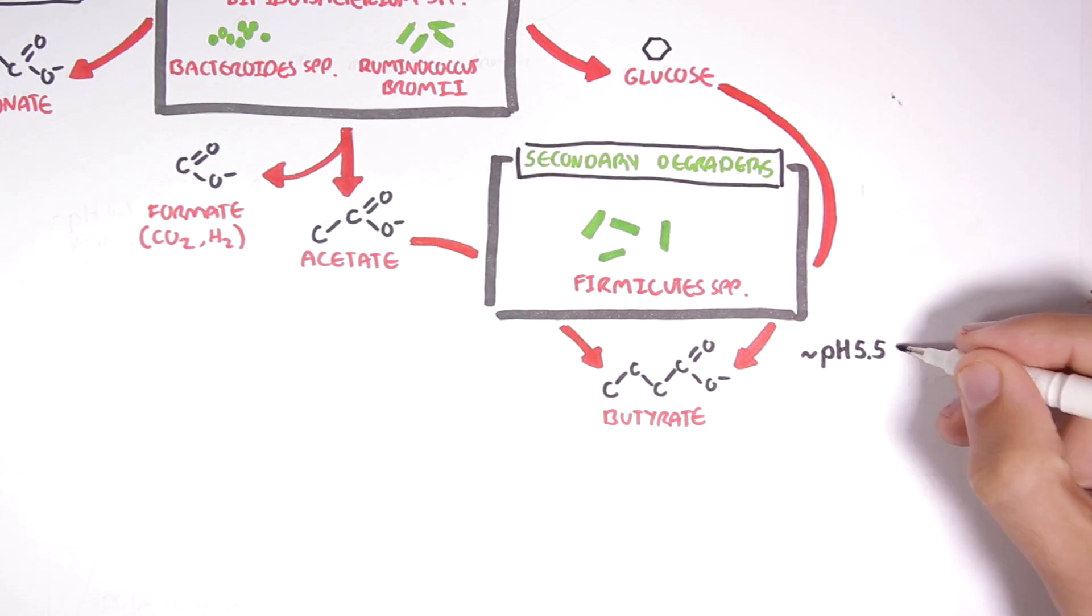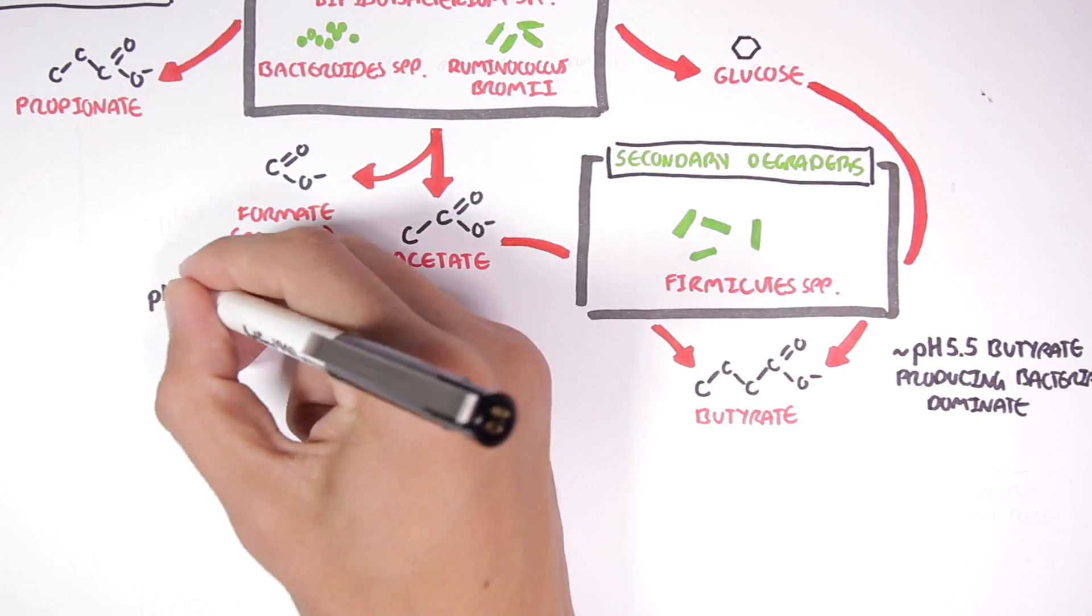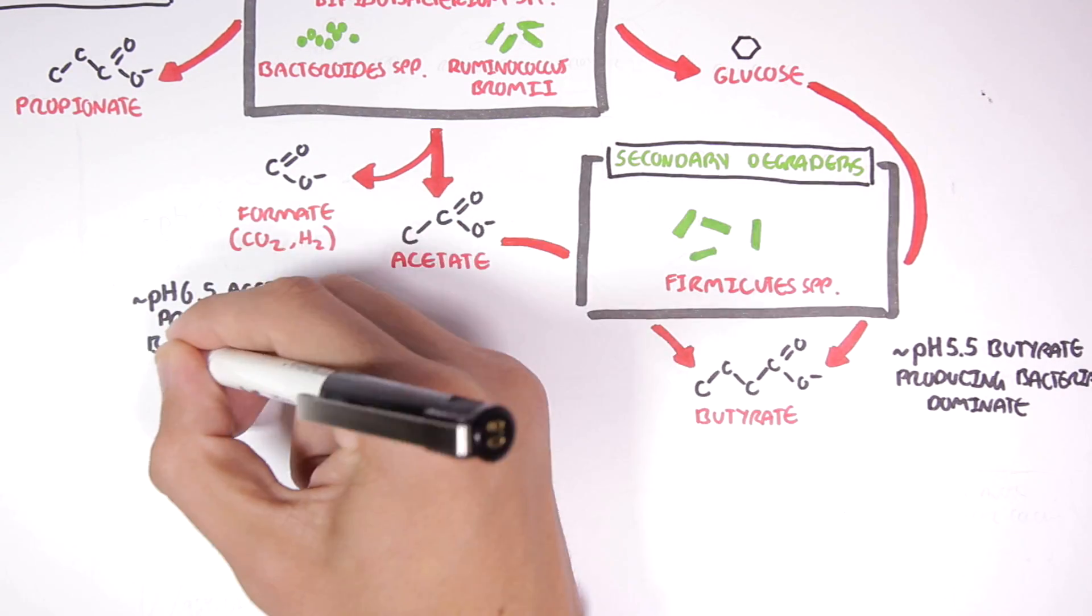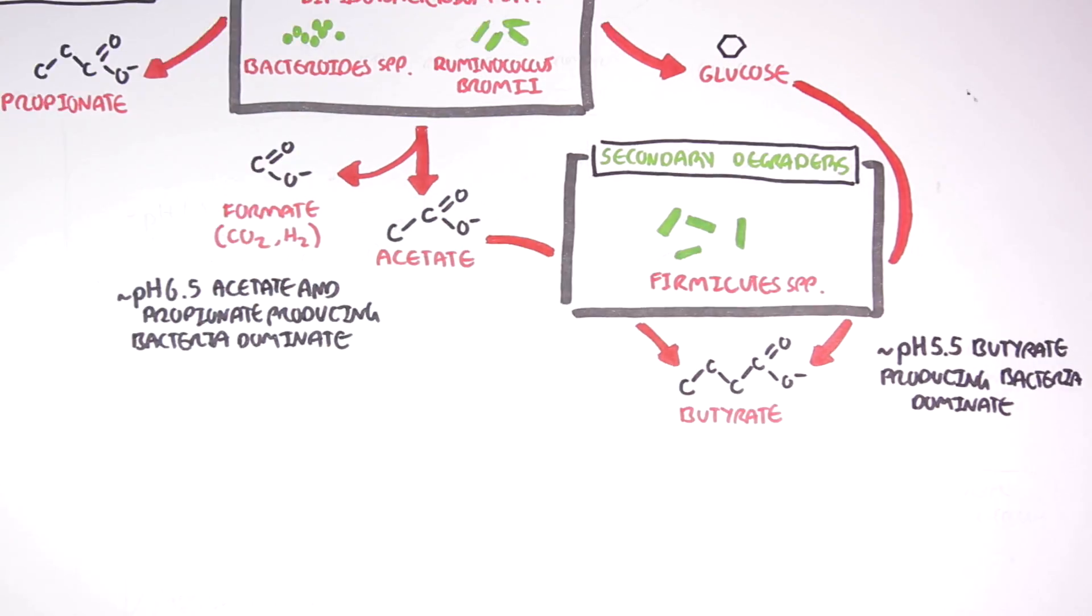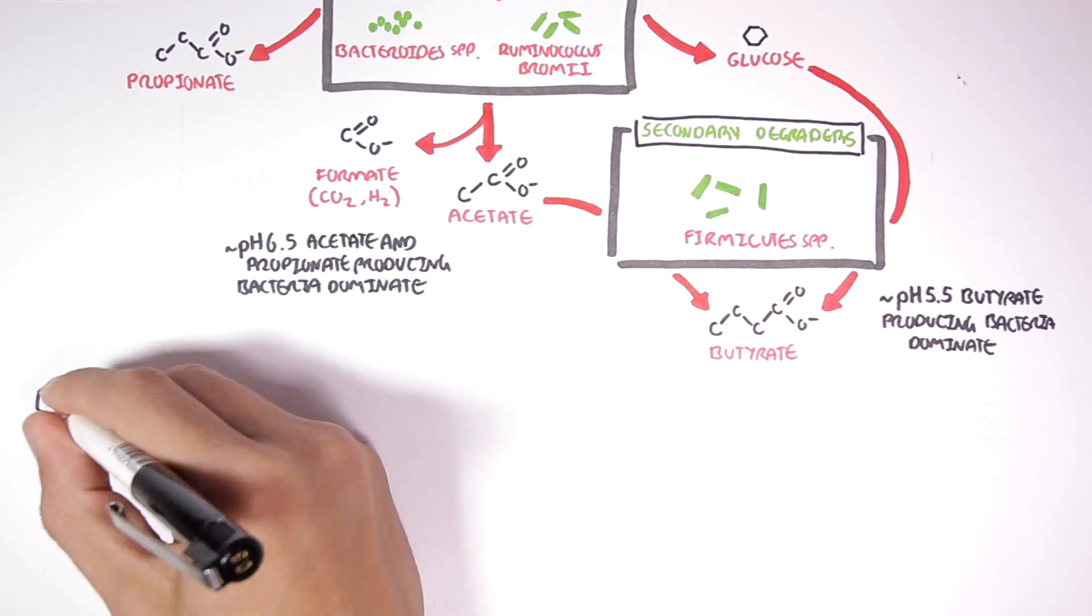At a low pH, about 5.5, butyrate-producing bacteria are known to dominate the colon. However, at a slightly higher pH, about 6.5, acetate and propionate-producing bacteria dominate, and butyrate-producing bacteria seem to be less prominent.